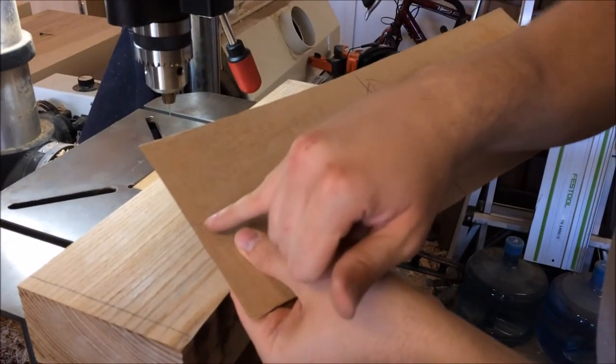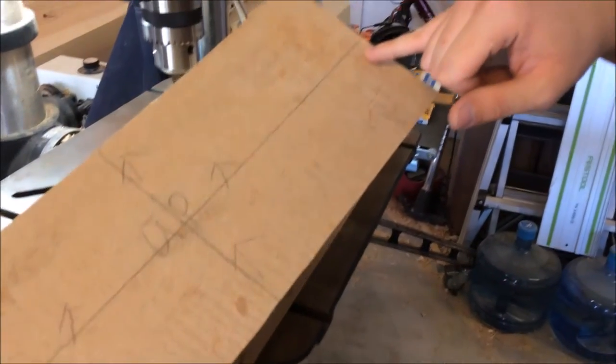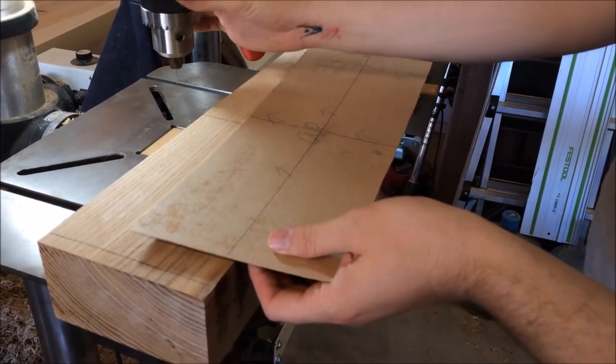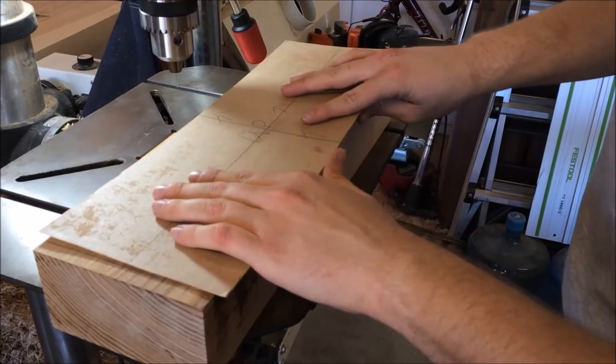I also have little divots here that I made so I know where my drill bit needs to go. This is a number 60 drill bit because that's what fits with the veneer nails I have.